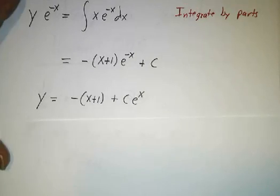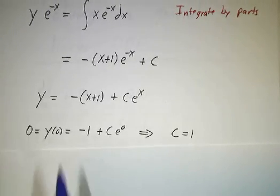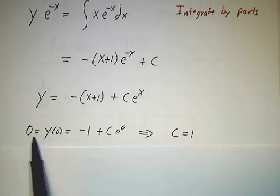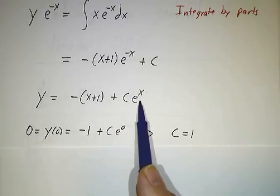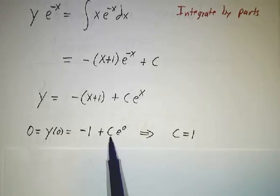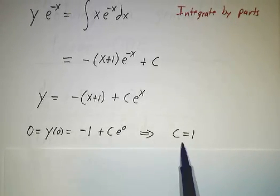But we didn't want a general solution, we wanted a solution with y(0) = 0. So we just plug in x equals 0, -1 plus Ce^0. Well, that's -1 plus C is 0. So C must be 1.